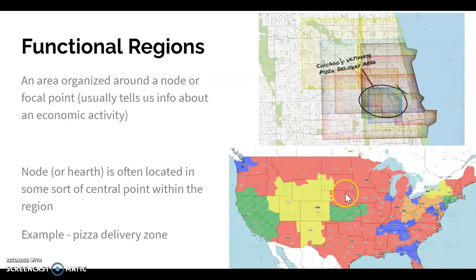On the map shown, there's an example of where different NFL games are broadcast in a particular week. The Seattle market is created by the presence of the Seahawks, and you can see the geographic area served by showing a Seahawks game on TV. When thinking about functional regions, think about the economic activities that are creating them.